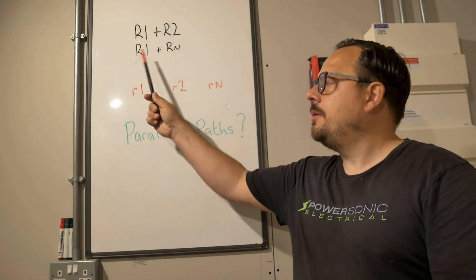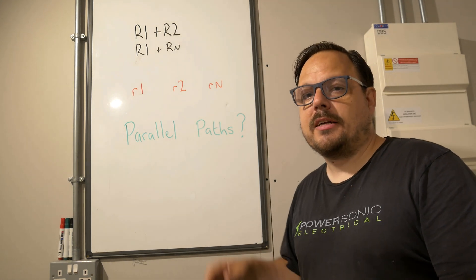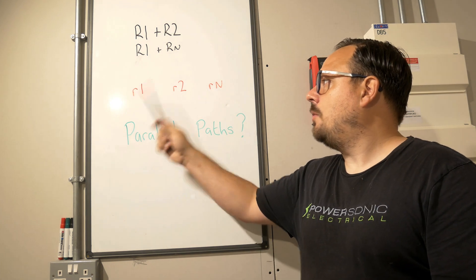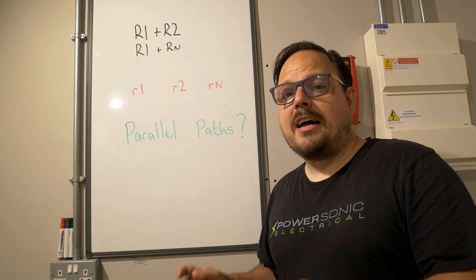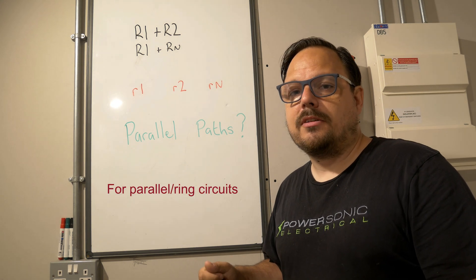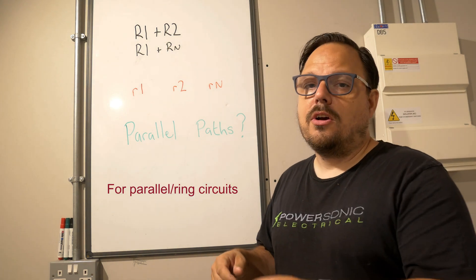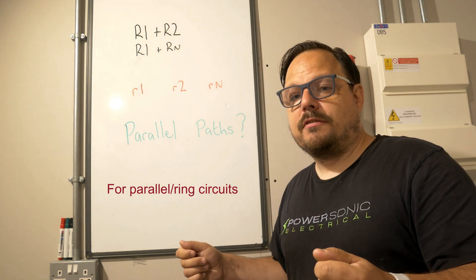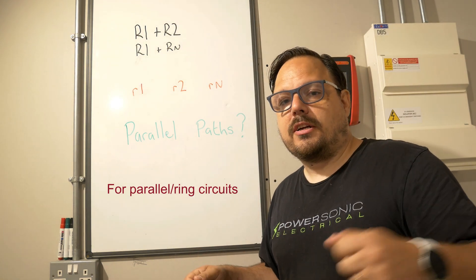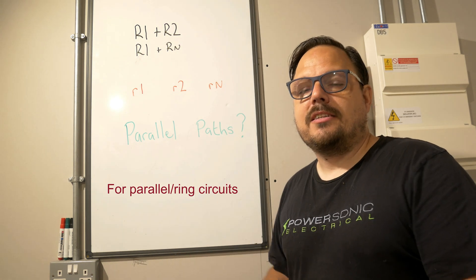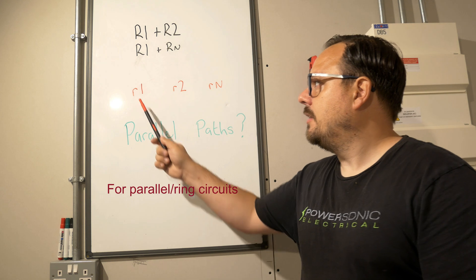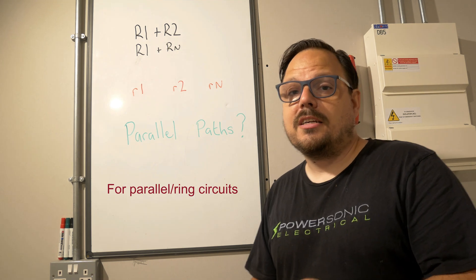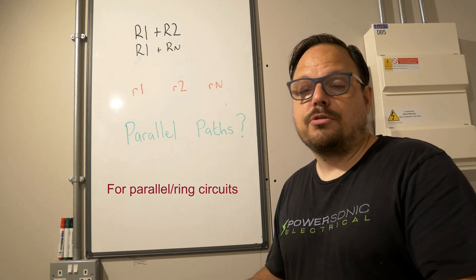We'll start by explaining why we use a capital letter and a non-capital to identify the different measurements. With little R1, little R2, and little Rn, in essence they are end-to-end resistances of a length of cable. That cable can run through a socket circuit, a lighting circuit, or even just be a piece of cable laid across the floor. You would put a crocodile clip onto one end, one on the other, and take a value of resistance: little R1 is your line conductor, little R2 is your CPC, and little Rn is the neutral conductor.